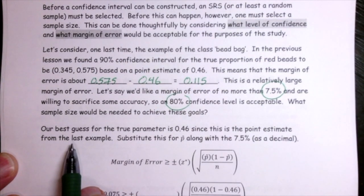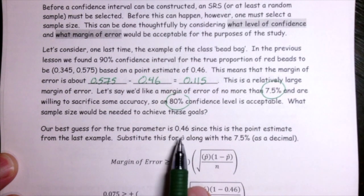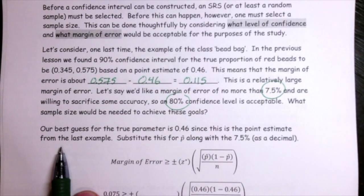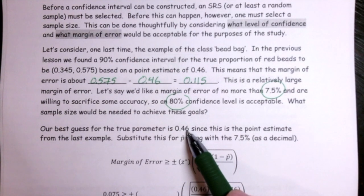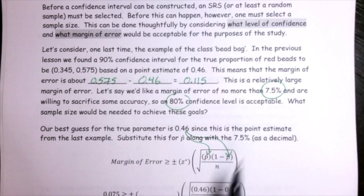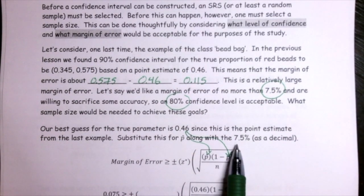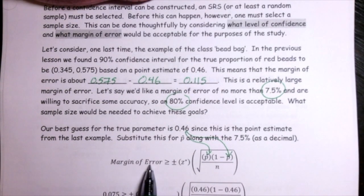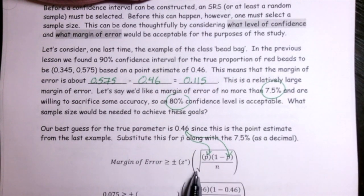We already have a sample from this population, so for our best guess for the parameter we can use the 0.46 from the previous example. We can look at the formula for the margin of error and substitute 0.46 for p-hat and 1 minus p-hat, and substitute 7.5% as the desired margin of error — but be careful, that needs to go in as a decimal. Notice I've written this as a greater-than-or-equal-to inequality, not an equation.